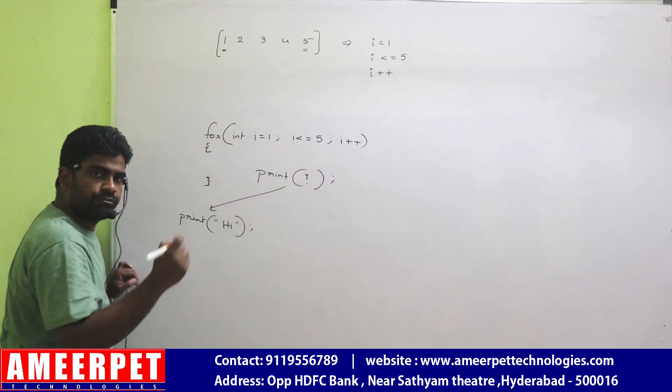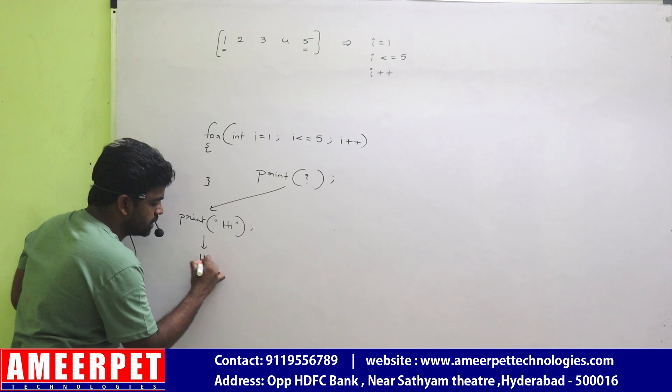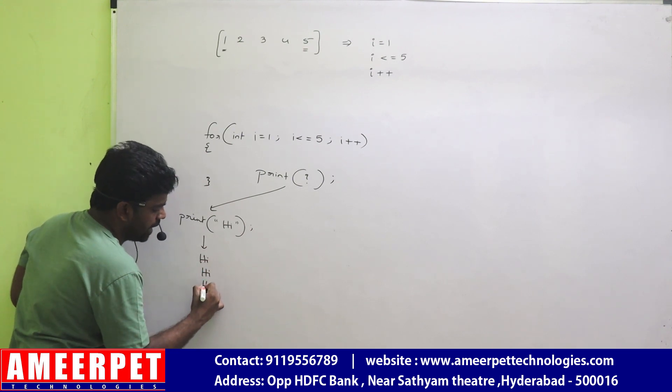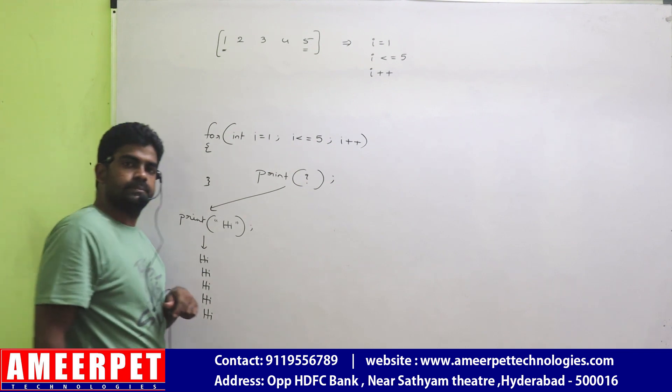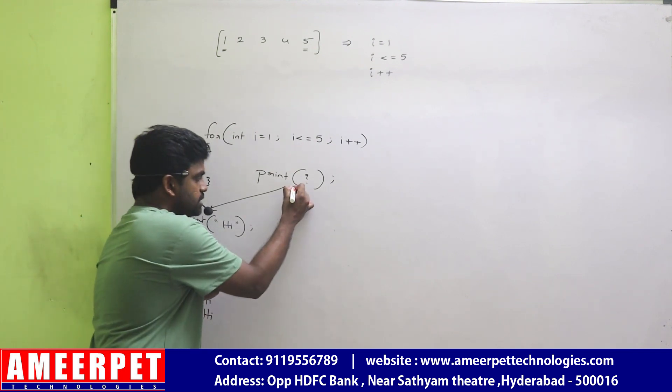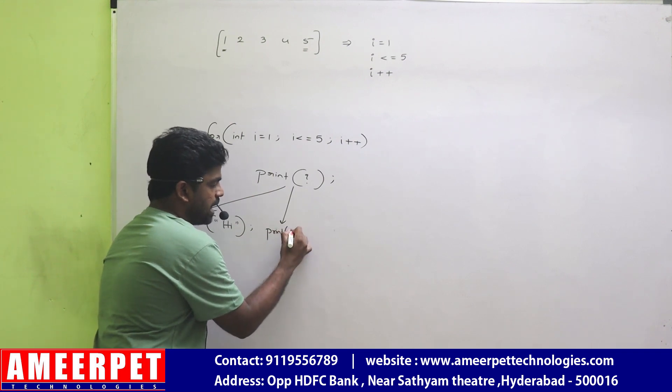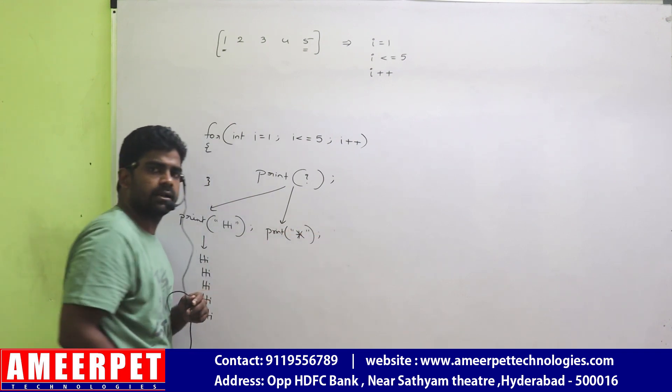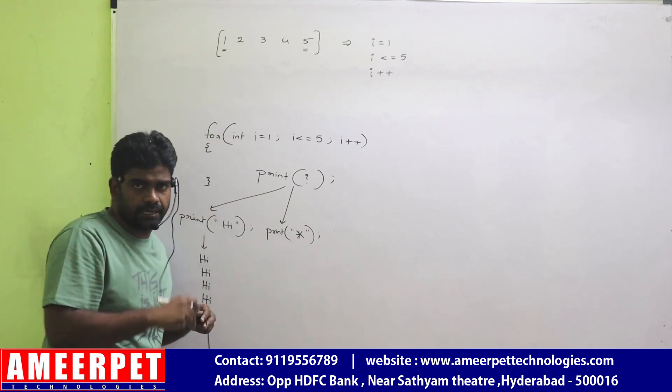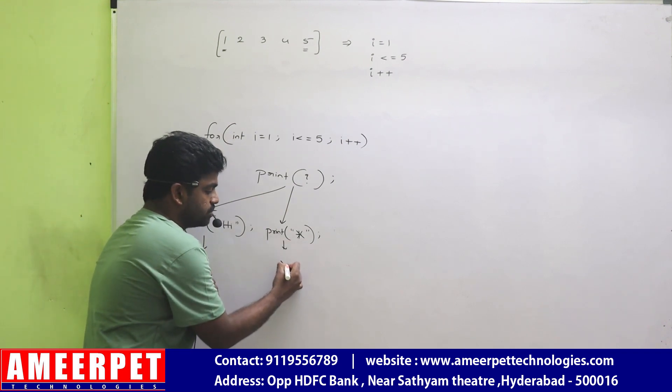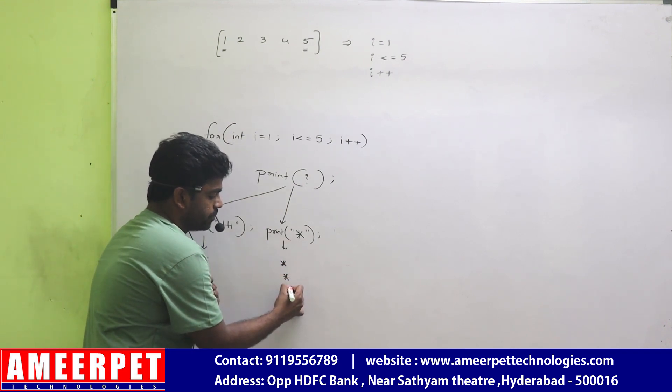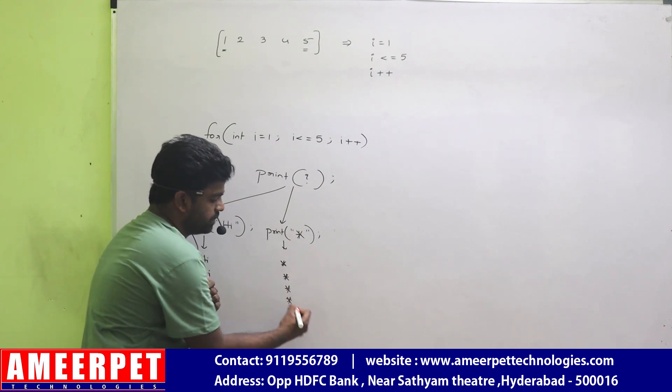How many times repeating? 5 times repeating. So 5 times you will get the value high, high, high, high, high. 5 times you will get. Suppose here I am not printing that high. I am just printing star in double quotes. Of course a character you can put it in single quotes also. Then 5 times star will print.